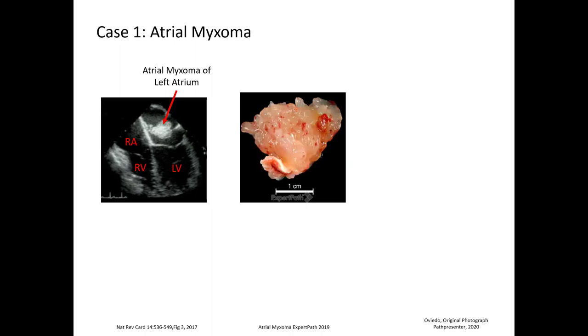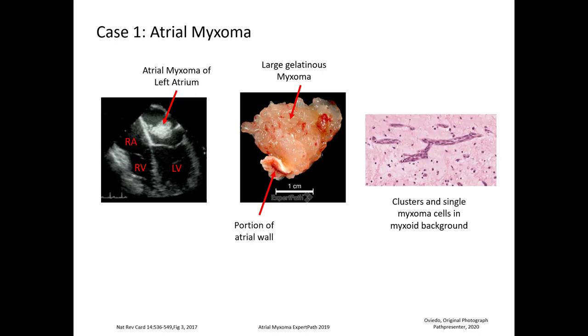Case 1 is atrial myxoma. Here is the cardiac ultrasound showing the atrial myxoma of the left atrium, the left ventricle, the right ventricle, and the right atrium. Here is the gross picture — you can see the large gelatinous myxoma and here is a portion of atrial wall which was removed with the tumor. And here on the right, you can see clusters and single myxoma cells in a myxoid background.